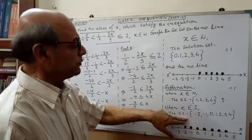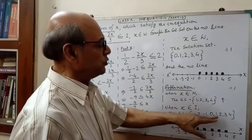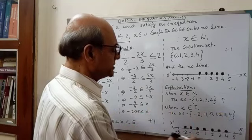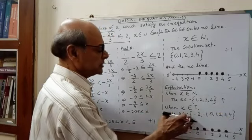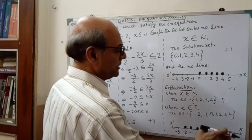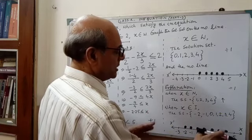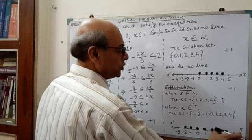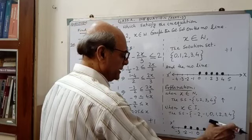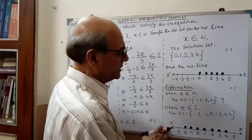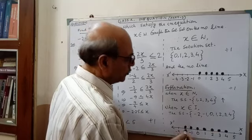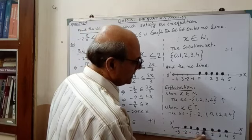The solution set will start from minus 2, minus 1, 0, 1, 2, 3, 4 — up to 4. After writing the solution set, you have to represent it on the number line. Draw the line with arrow marks on either side, then draw the points with dark circles.